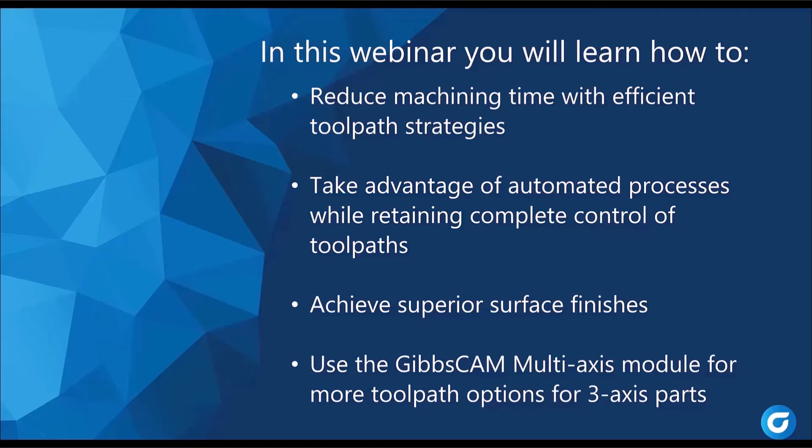Standardizing the company's approach to programming can be a major step toward reducing setup times and minimizing mistakes at the machine since everybody knows what to expect. As time allows, we'll touch on the toolpath factors that affect surface finishes. Beyond the two standard 3-axis toolpath engines, we'll look at how the multi-axis module provides additional toolpath styles beneficial in a 3-axis environment, and can lay the groundwork for a future move into full 4- or 5-axis milling.